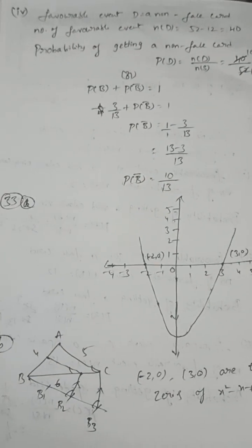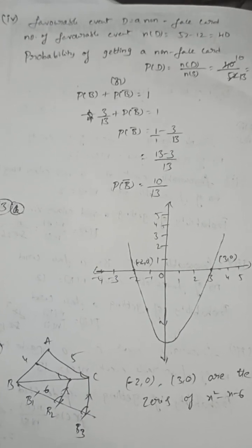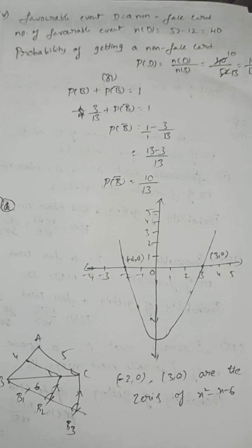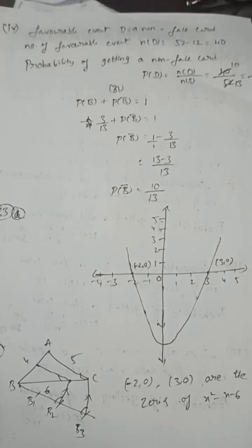Draw the graph of the equation x² - x - 6. The zeros are (-2, 0) and (3, 0). Thank you for watching my videos. Please subscribe to our YouTube channel and share it with your friends. Thank you.